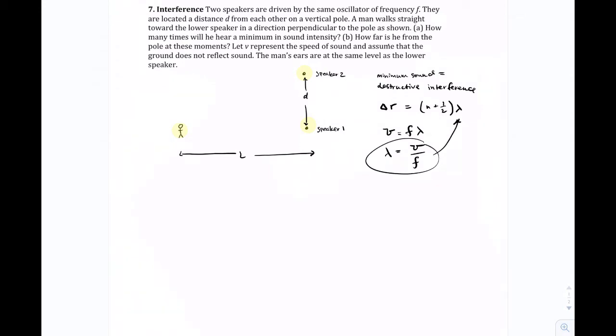The other thing is the path length difference. So the path length difference is the difference in the distances between the person that's receiving the waves, so this guy over here. This distance, which I'm going to call X, and you're like, well, that one was called L,